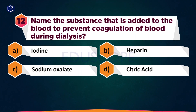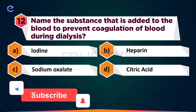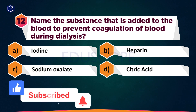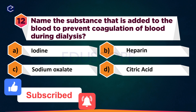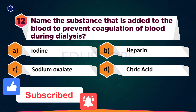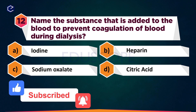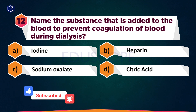Name the substance that is added to the blood to prevent coagulation during dialysis. A: Iodine, B: Heparin, C: Sodium Oxalate, D: Citric Acid.